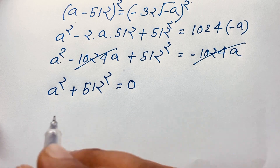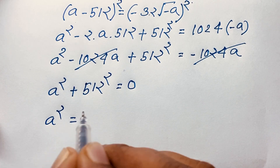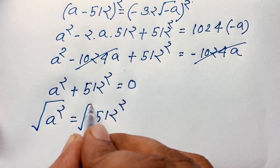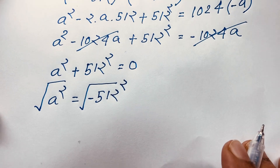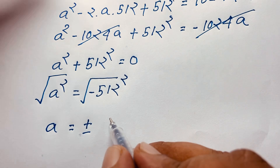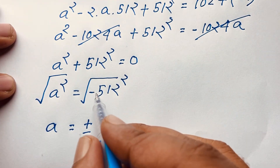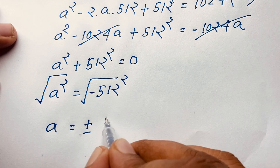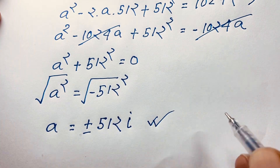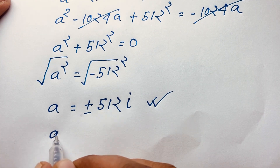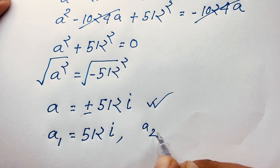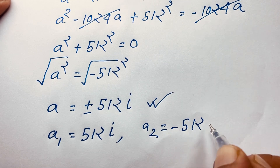Moving 512 squared to the other side: A squared equals negative 512 squared. Taking both sides square root, we find A equals plus or minus square root of negative 512 squared. Since we have square root of negative 1, that is i. So 512 squared under the square root gives 512, and we get A₁ equals 512i and A₂ equals negative 512i.